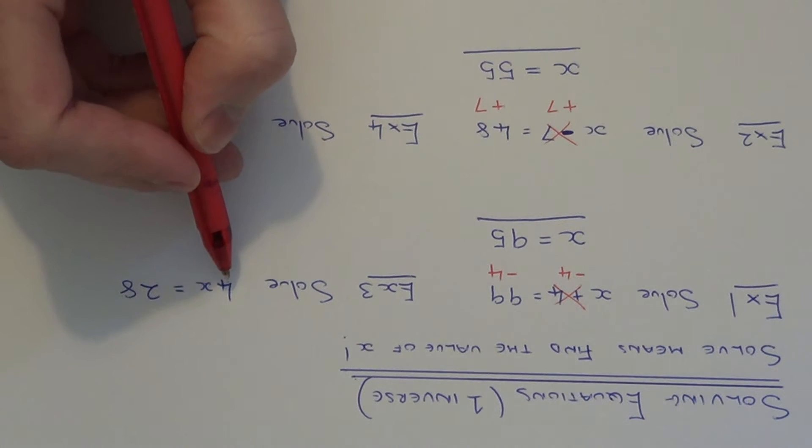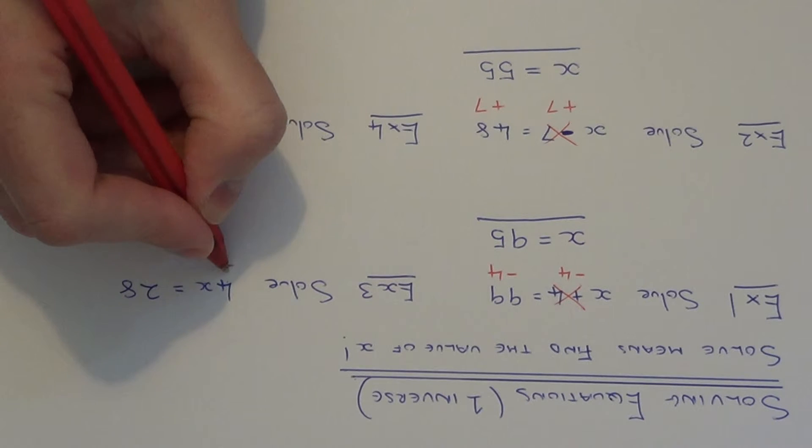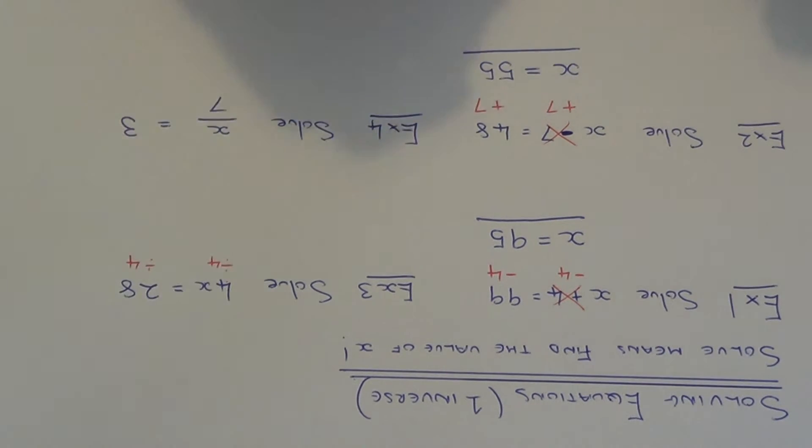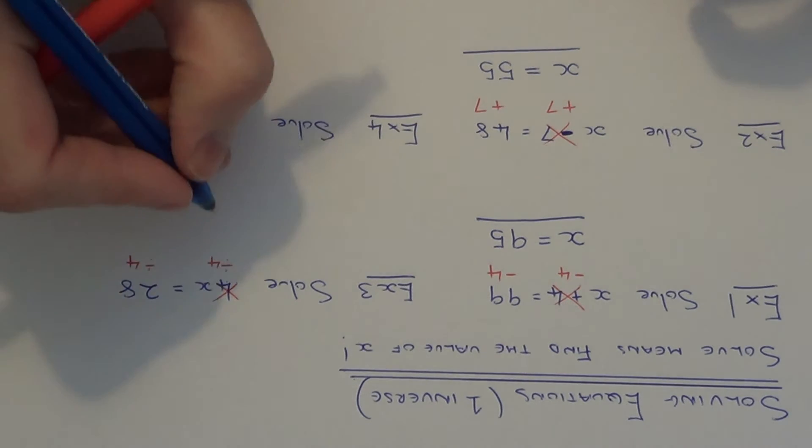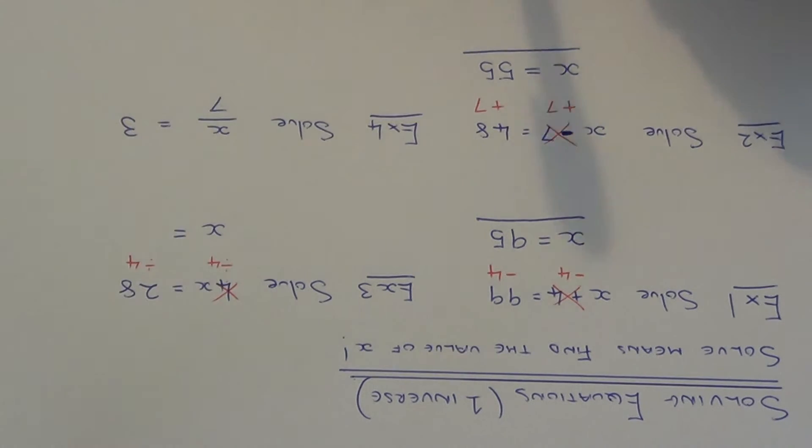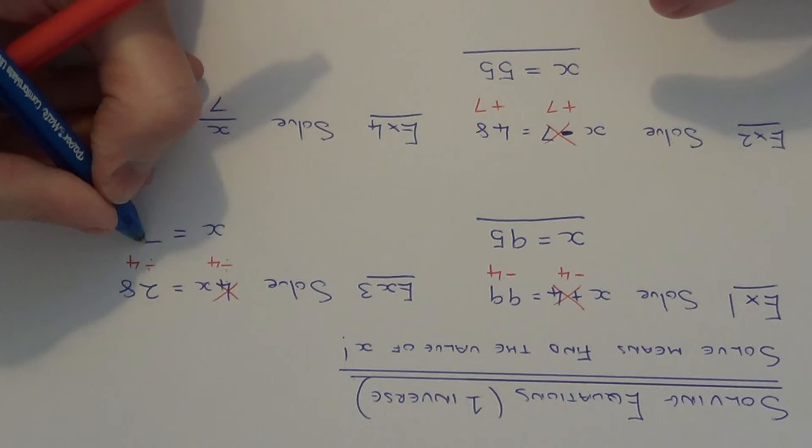So the opposite to times 4 is to divide by 4. So divide both sides of the equation by 4. This will get rid of the 4 on the left hand side and just work out the right hand side now. 28 divided by 4 is 7.